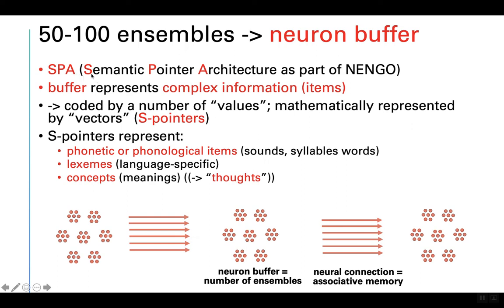The semantic pointer architecture comes into play here. A buffer is now able to represent complex information, which we call items. These items can be concepts, meanings, or thoughts. In our speech production and perception model, they can be phonetic or phonological units like syllables, phonological items, sounds, or lexemes. These items are represented mathematically by S-pointers using the semantic pointer architecture — S-pointers are vectors of values represented by neural activity in a neuron buffer.